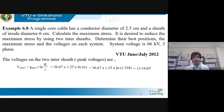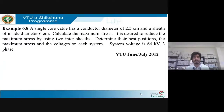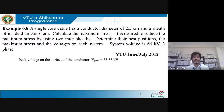V_max1 = Gmax × r × ln(R1/r) = 13.34 kV. V_max2 = Gmax × R1 × ln(R2/R1) = 17.86 kV. The peak voltage on the surface of the conductor, calculated initially, corresponds to 53.88 kV.